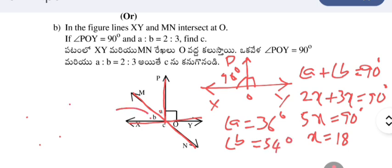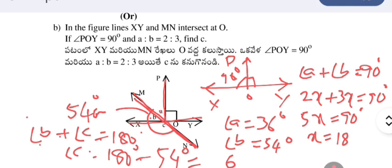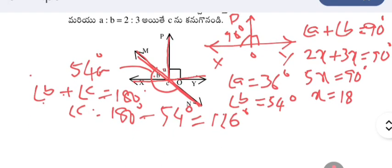So angle b = 54 degrees. On the straight line MN at point O, angle b + angle c = 180 degrees. Since b = 54 degrees, angle c = 180 minus 54 = 126 degrees. So the value of angle c is 126 degrees.